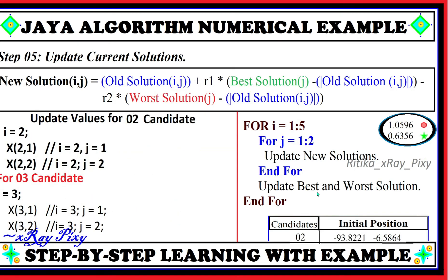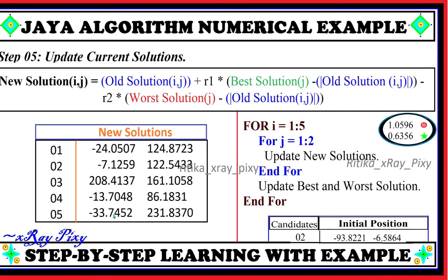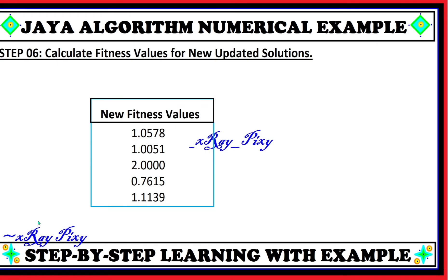For the second candidate (i=2, j=1 and 2), third candidate (i=3, j=1 and 2), and so on, we update the new solution for each candidate. You can see the updated new solutions for all candidates in the current population.